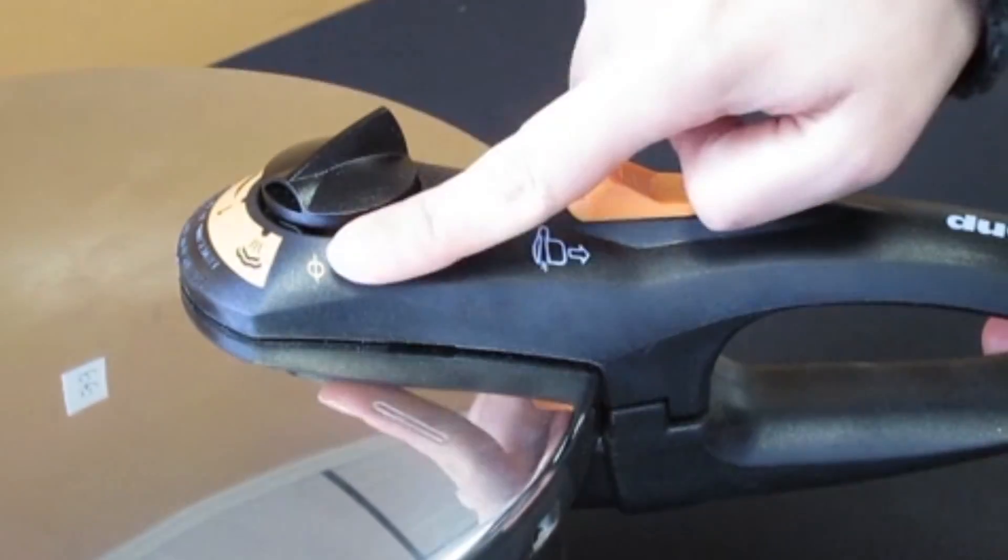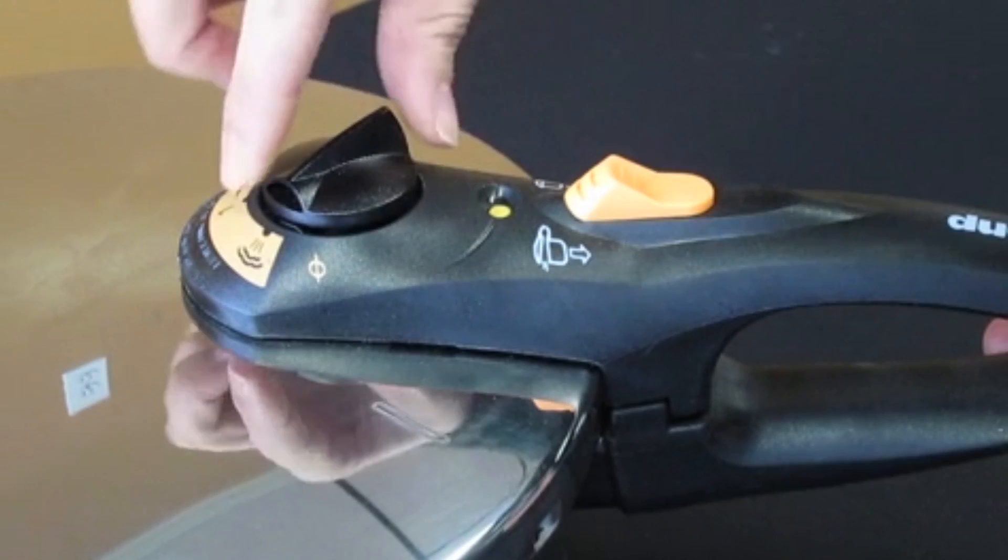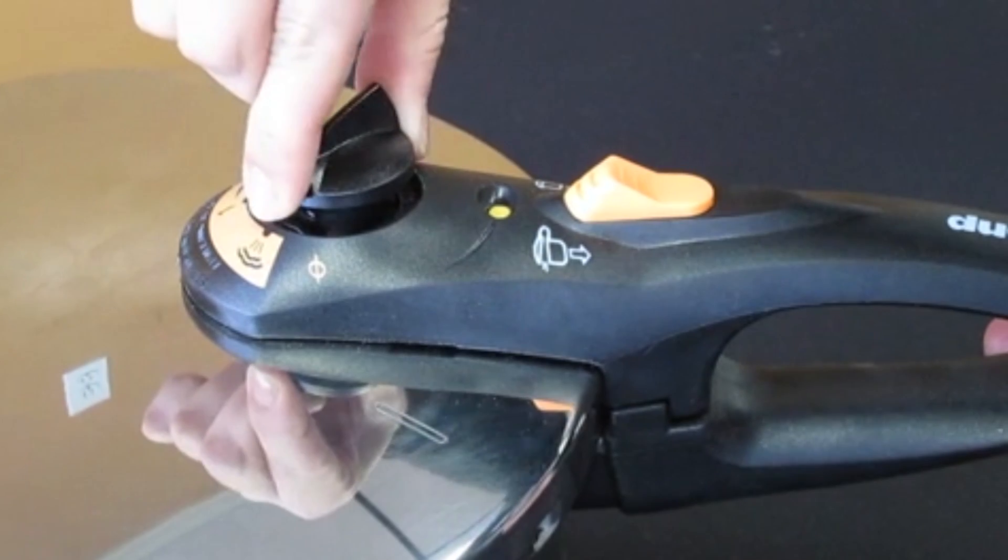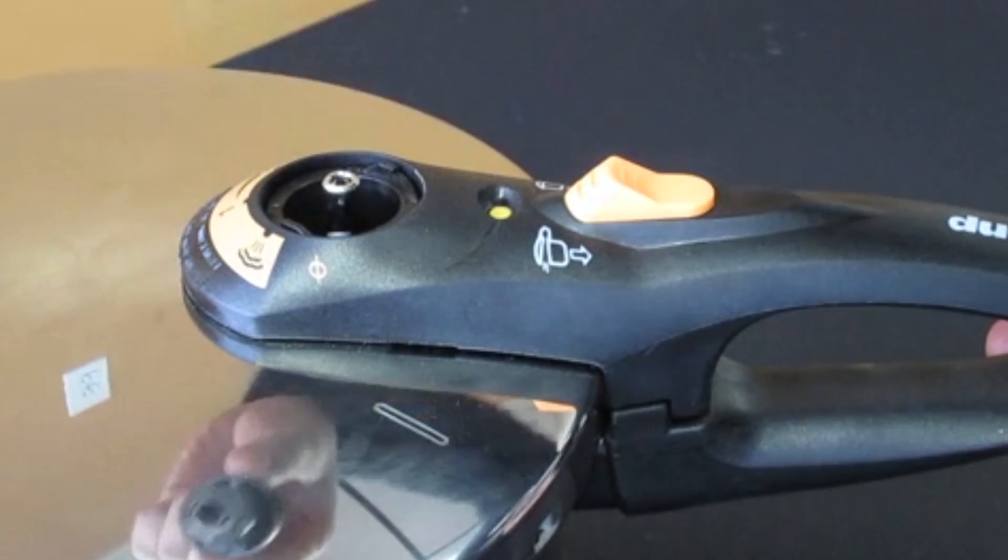To remove the operating valve, turn the knob counterclockwise until it can't turn anymore. Align it with the steam release icon, then slightly lift the operating valve up and continue to turn the knob counterclockwise until the valve releases from the slot.